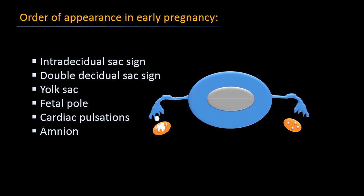To review the order of appearance in early pregnancy: first, the intradecidual sac sign; then the double decidual sac sign; then the yolk sac; then the fetal pole and cardiac pulsations; then the amnion.